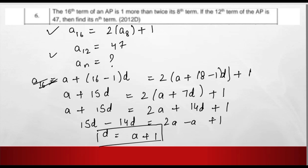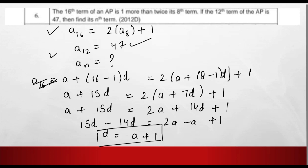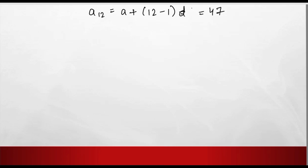Next, we have a₁₂ equals 47. We write a₁₂ equals a plus (12 minus 1) into d, which equals 47. Now we put the value of d, which is a plus 1. So in place of d we substitute a plus 1.